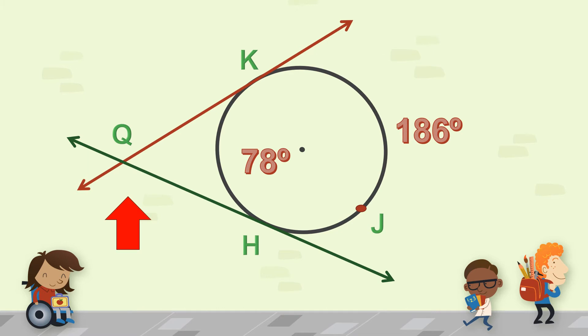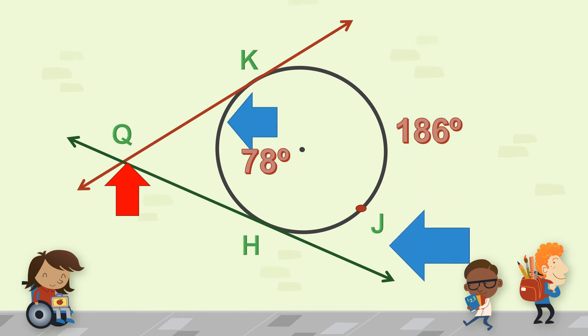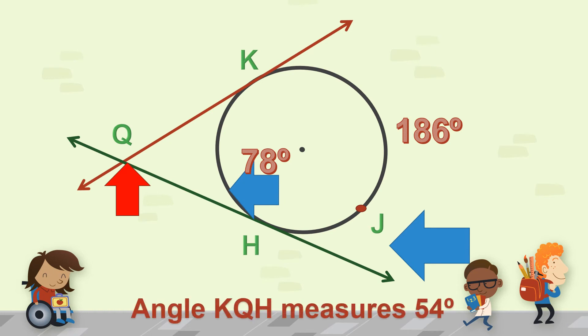Another example. We have angle KQH and we don't know what its measure is. To get its measure, take the measure of the bigger arc: arc KJH is equal to 186 degrees, and arc KH is 78 degrees. According to the theorem, get the difference and then divide by two. So bigger arc 186 degrees minus 78 degrees, divide by two — the measure of angle KQH is equal to 54 degrees.